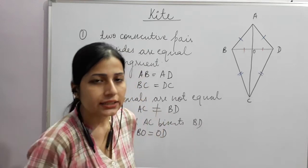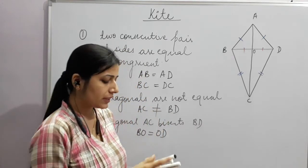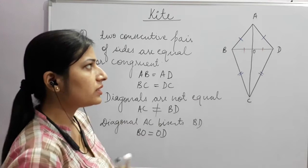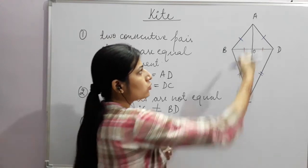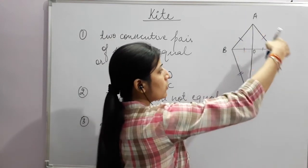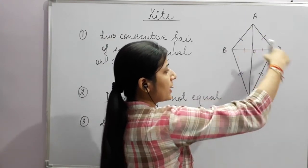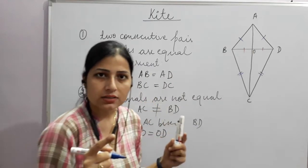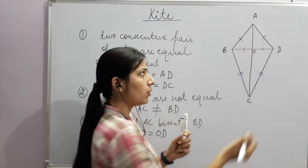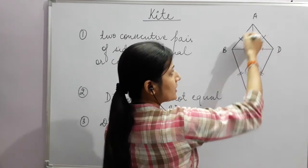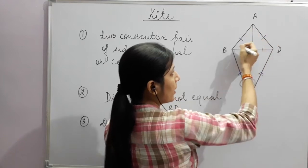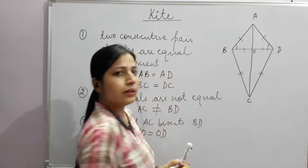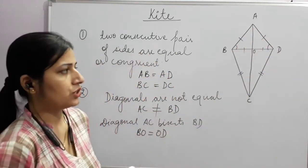A triangle whose two sides are equal is called an isosceles triangle. The property of an isosceles triangle is that the two base angles — the angles opposite the equal sides — are also equal. So the two equal sides here are above the base, and therefore the two base angles are equal.